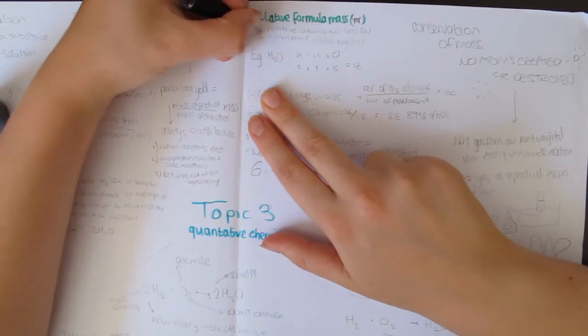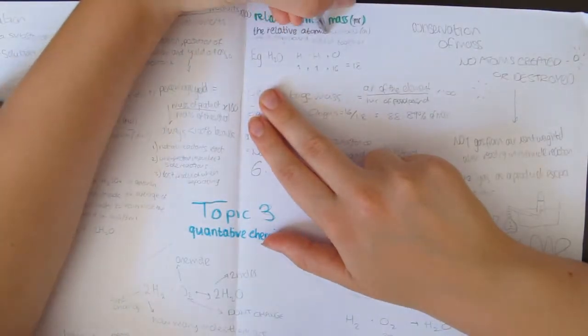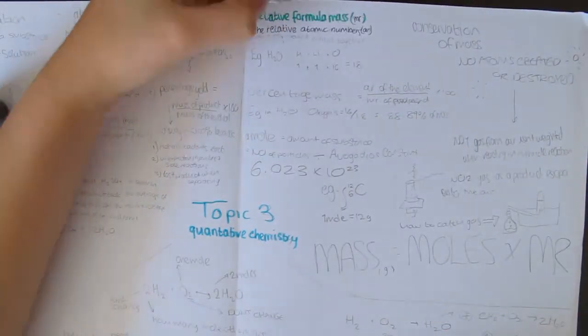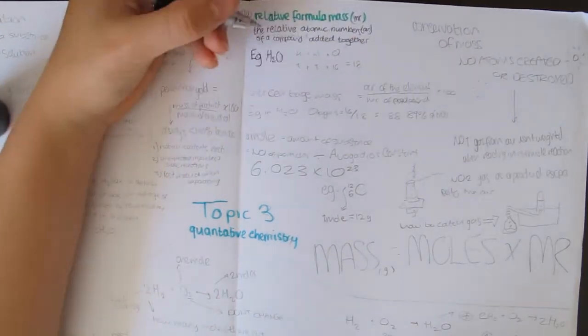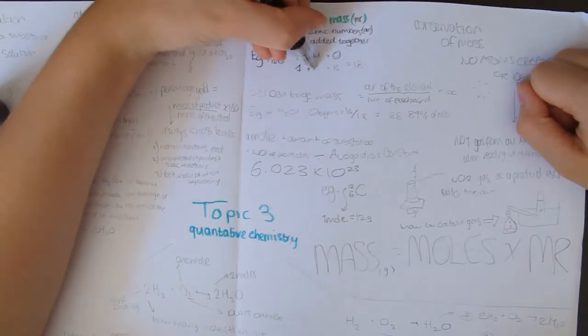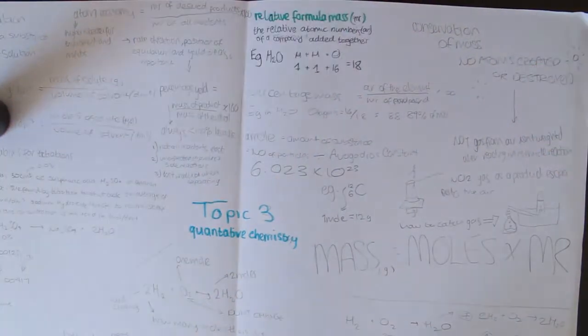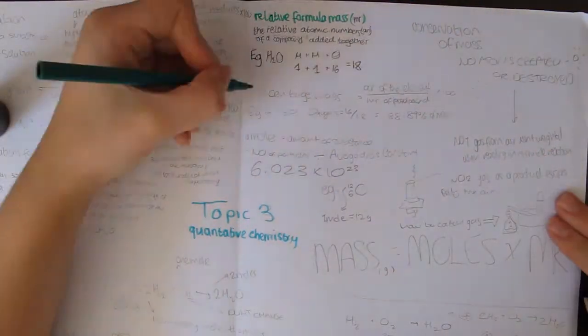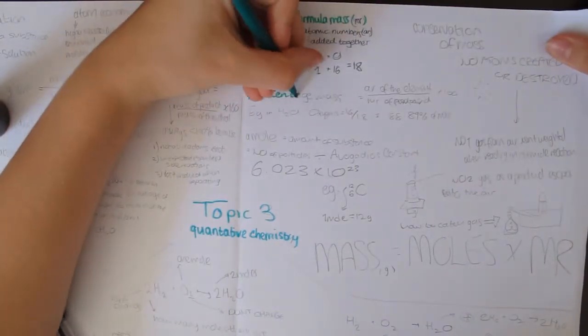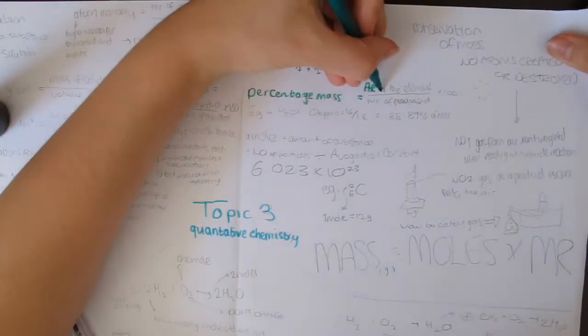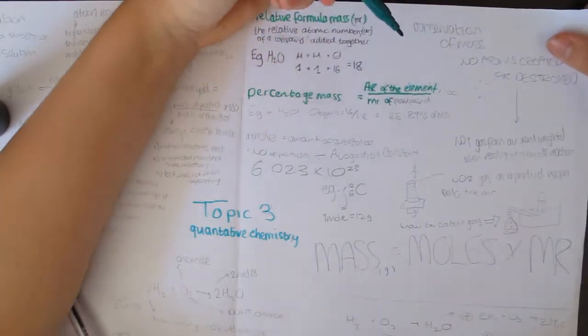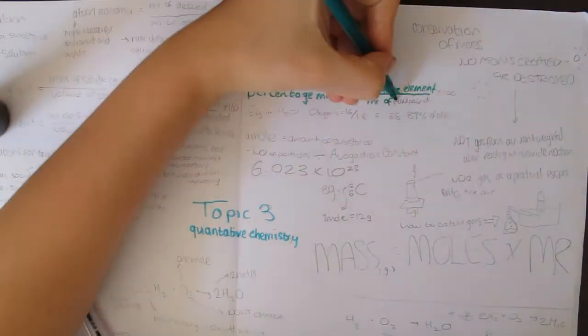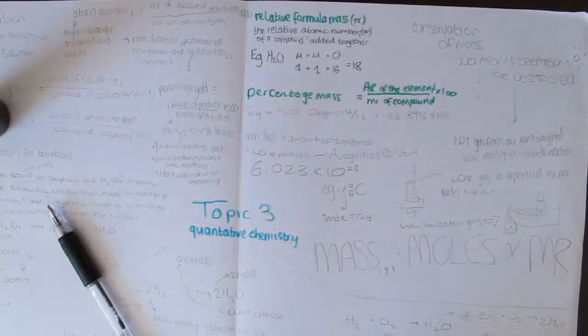Using this, the percentage mass of an element in its compound can also be worked out by dividing the AR of the compound by the MR of the product, and then multiplying by 100. For example, oxygen makes up 88.89% of the mass of water. These can be made into fairly complicated questions in the exam, so it's best to nail the basics here. I will leave a link down below to our worksheet if you need some practice, or there are questions in the AQA CGP Chemistry textbook.